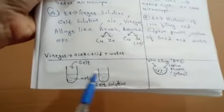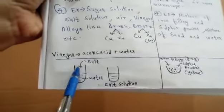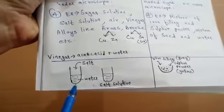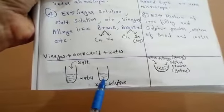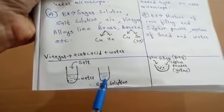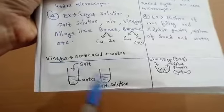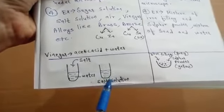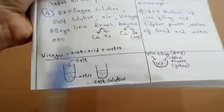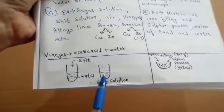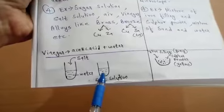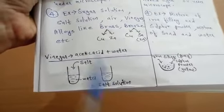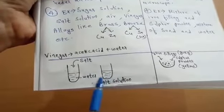Looking at how salt solution is prepared: salt is dissolved in water, and when completely dissolved, the composition becomes the same throughout. Salt is not visible in water, so the components salt and water cannot be seen separately. In a homogeneous mixture, components cannot be seen even under a microscope, and there is no visible boundary of separation.